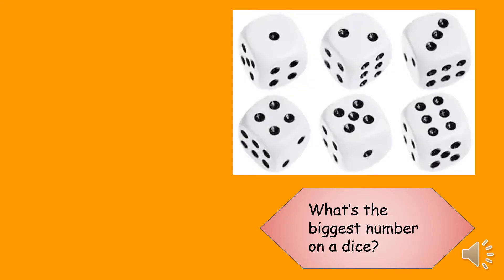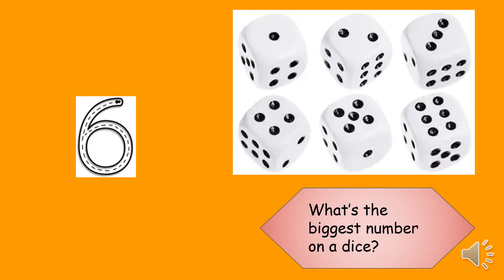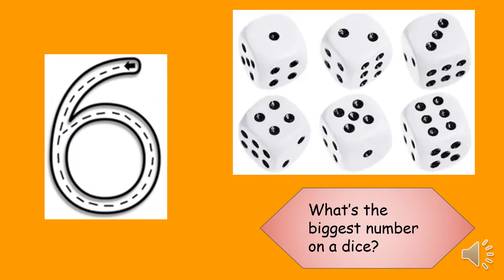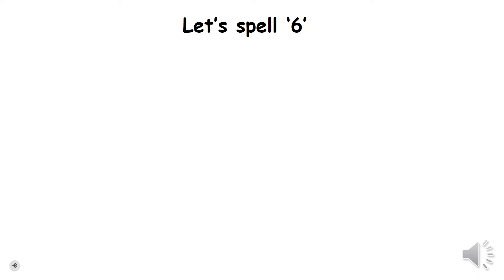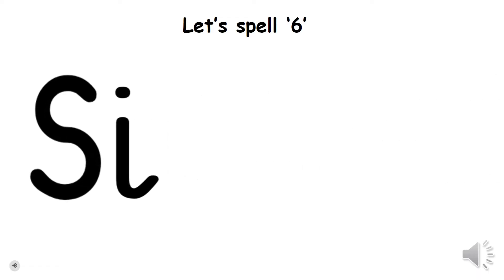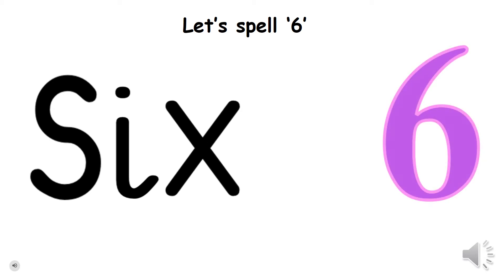Now look at these dice and tell me what's the biggest number you see on a dice? Yes, we all know that 6 is the biggest number we have on a dice. So we are going to spell number 6 first. Let's spell S-I-X, 6.